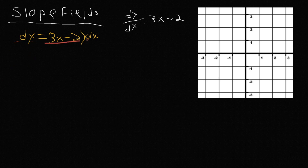So now you have dy is equal to this, and now you can integrate both sides. The left side — if this confuses you, this is basically 1 dy, and the integral of 1 with respect to a variable is just that variable. So now we have y, and now we can use our power rule for the x side. So we can add 1 to the exponent — this is x to the first — so we're going to add 1, and then divide by that exponent, which is 2. So that's going to be y is equal to 3 halves over 2 x squared.